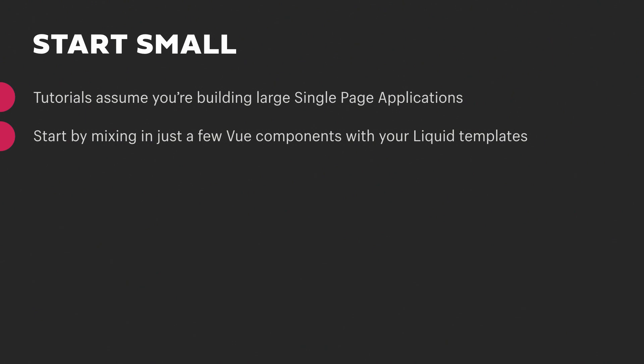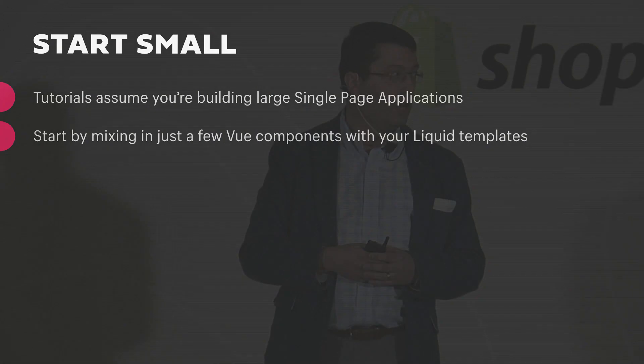It's also okay to start small. A lot of tutorials assume you're building one giant single-page application, but we found it's totally fine to sprinkle in just a few components on your Shopify theme where you need that extra functionality. As your application grows and you have several sibling components on your page, we find it useful to use Vuex for state management — all of your business and API logic can live in Vuex, and your front-end components can be mostly about reacting to that data and user interaction, keeping them nice and simple.